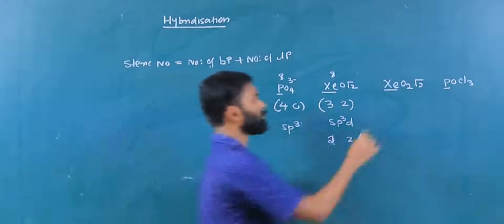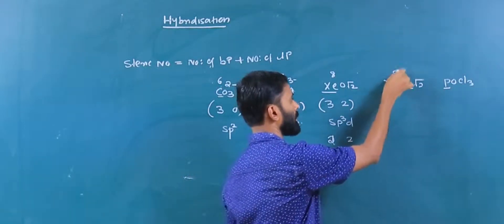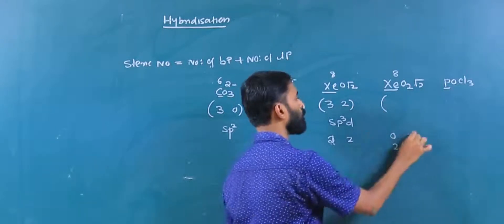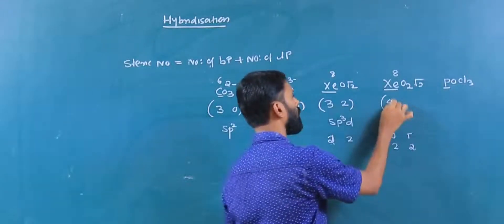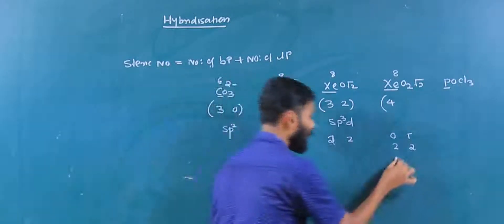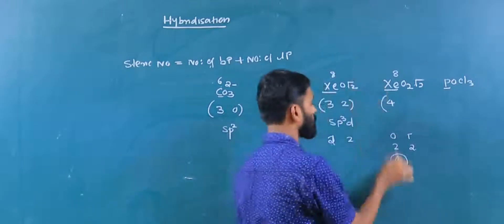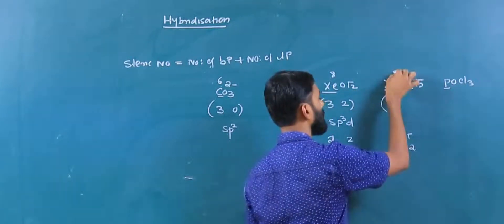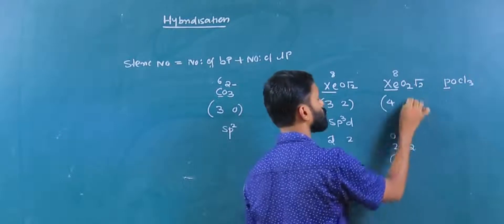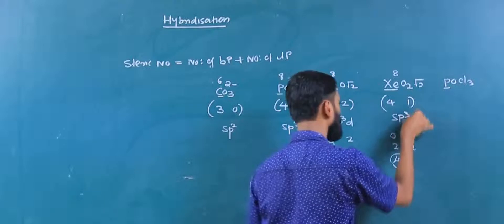Now Xe2O2F2 — xenon, valence electrons 8. Bonds: oxygen 2 bonds plus fluorine 2 bonds, total bonds 4. Oxygen forms a double bond, so 4 plus 2 equals 6. Calculation: 8 minus 6 equals 2, divided by 2 equals 1 lone pair. Hybridization is SP3D.